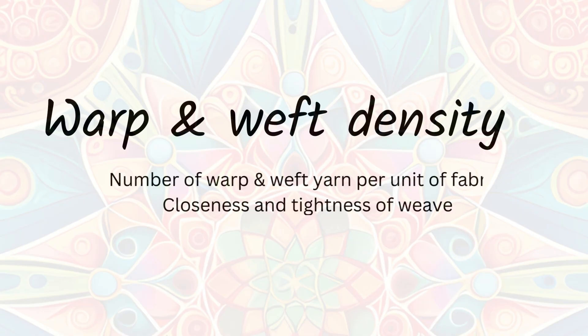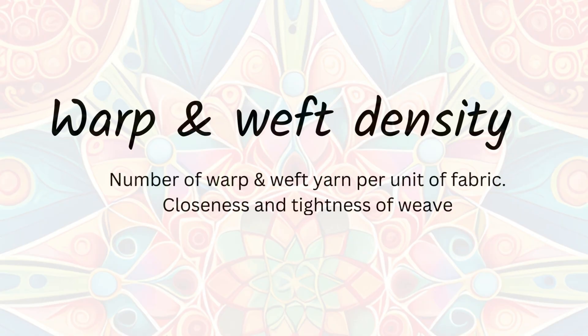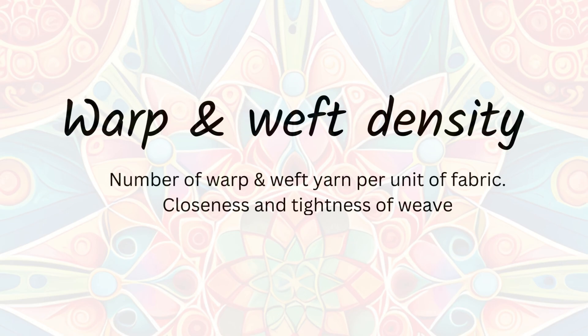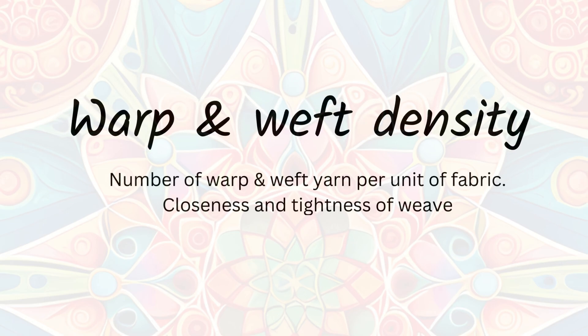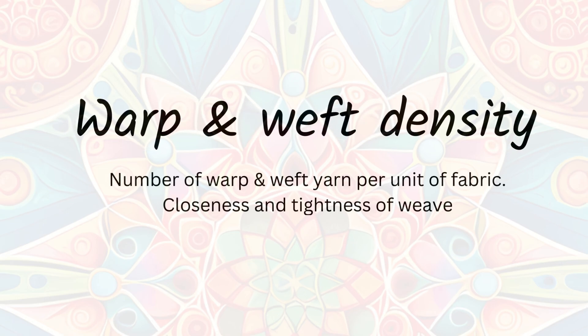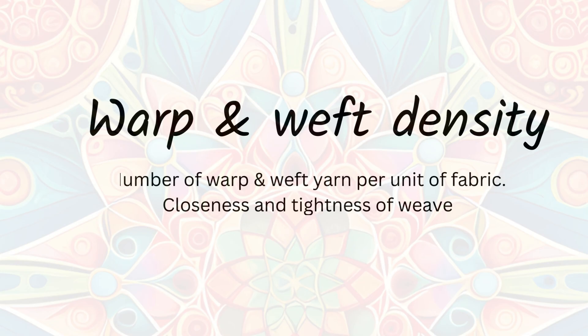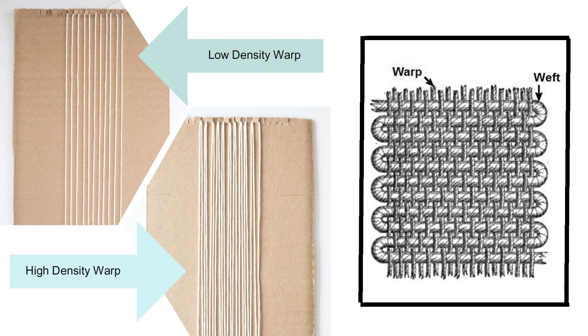Warp and Weft density means kitne threads per inch or per centimeter fabric ki lengthwise or widthwise direction mein hain. High warp and weft density wale fabric mein warp and weft threads ek-dusre ke kareeb hote hain.